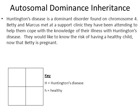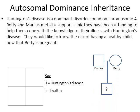Here's our final practice problem. Huntington's disease is a dominant disorder found on chromosome 4. Betty and Marcus met at a support clinic they've been attending to cope with having Huntington's disease — so both have the disease. They now want to know the risk of having a healthy child since Betty is pregnant. I draw a square for Marcus and a circle for Betty, connected with a child. I color in both Marcus and Betty since they each have the disease. They have to be heterozygous because they are clearly of adulthood age — if either were homozygous dominant, they would not have survived this long.